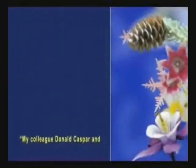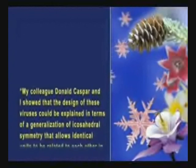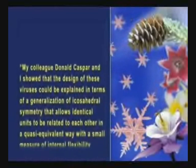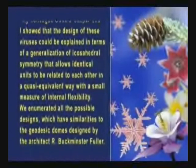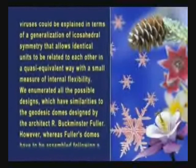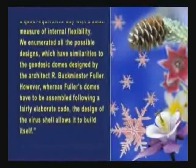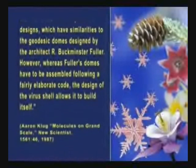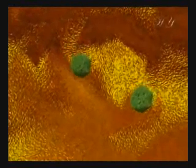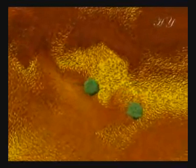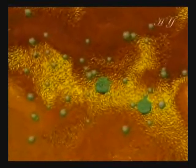Aaron Klug explains: "My colleague Donald Casper and I showed that the design of these viruses could be explained in terms of a generalization of icosahedral symmetry that allows identical units to be related to each other in a quasi-equivalent way with a small measure of internal flexibility. We enumerated all the possible designs, which have similarities to the geodesic domes designed by the architect R. Buckminster Fuller. However, whereas Fuller's domes have to be assembled following a fairly elaborate code, the design of the virus shell allows it to build itself." This once again reveals a sensitive planning and perfect structure even in viruses, regarded as one of the simplest and smallest living things.